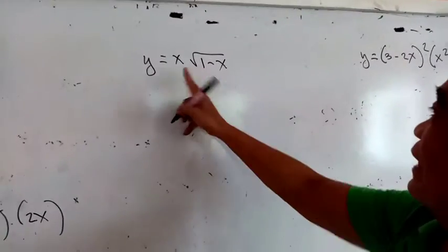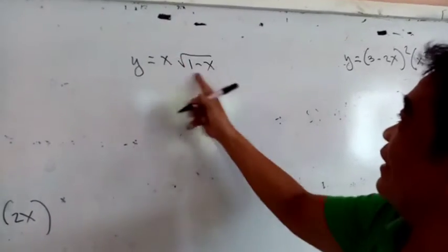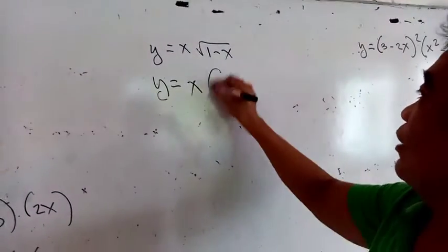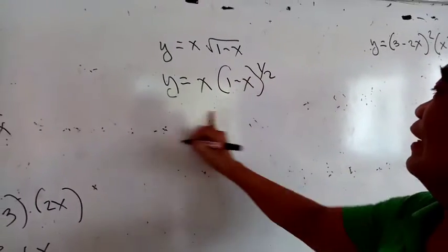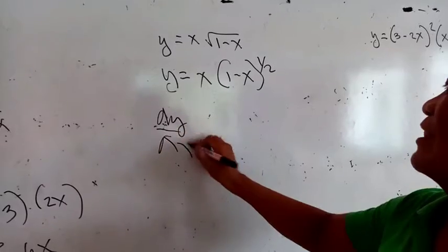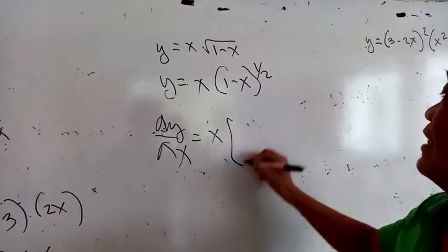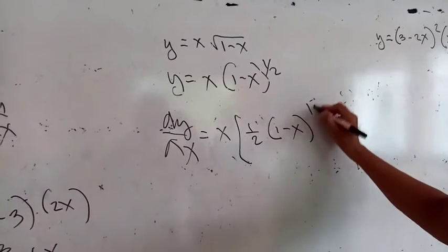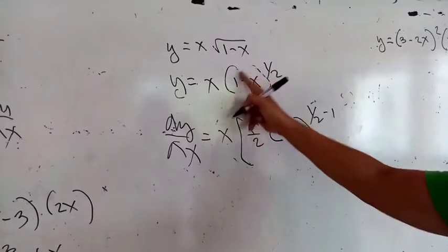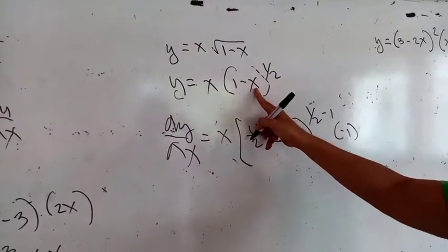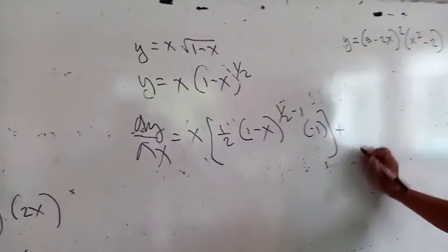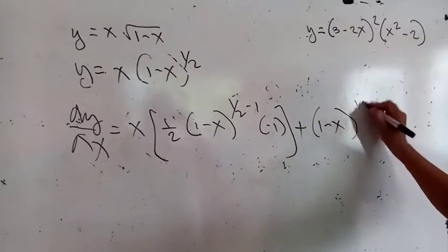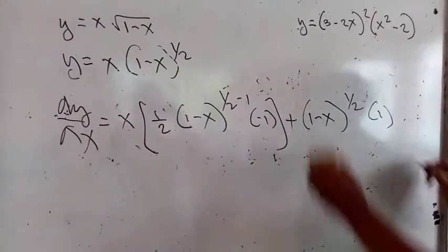Next, you are given a product with a radical notation. As usual, you translate this to an exponential form before you differentiate. So in algebra, y is x multiplied by 1 minus x raised to the positive 1 half. The derivative of y with respect to x will be the first, x, times the derivative of the second. That will be 1 half, multiplied by 1 minus x to the 1 half minus 1. You differentiate that: derivative of 1 is 0, derivative of negative x is negative 1.